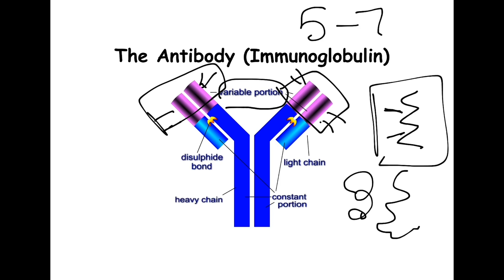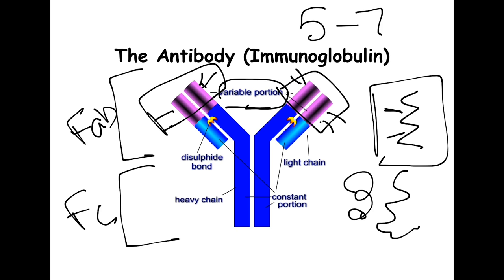For example, if you got the flu vaccine against H1N1, a particular strain, you will produce antibodies that detect only that strain. If the flu strain going around was H3N2, the antibodies would not recognize it — that's how specific they can be. We have the variable portion, and also this portion down here called the FC, or constant portion. There is a FAB portion — the whole part at the top — and the FC part at the bottom. When antibodies attach to a foreign invader, the variable region is what attaches, and the FC is the part that sticks out.